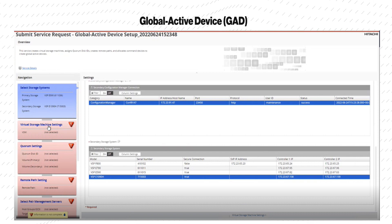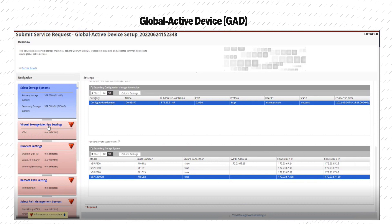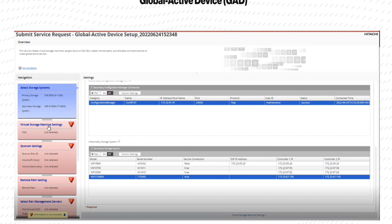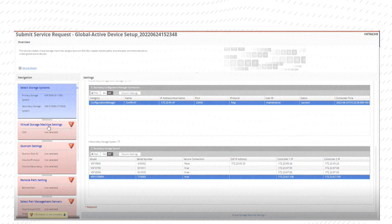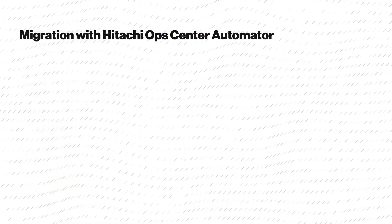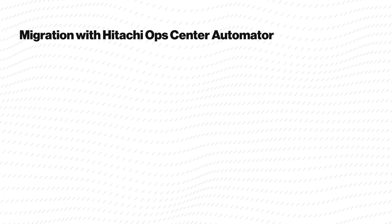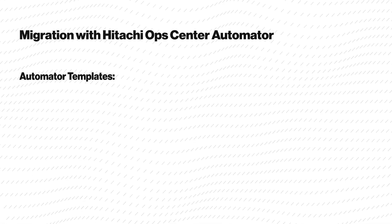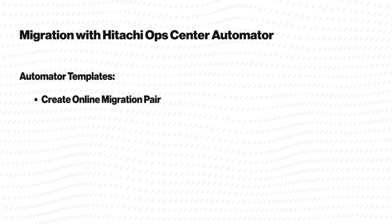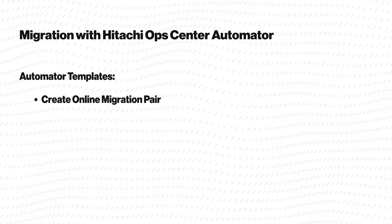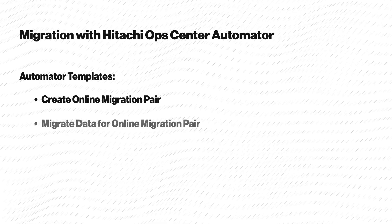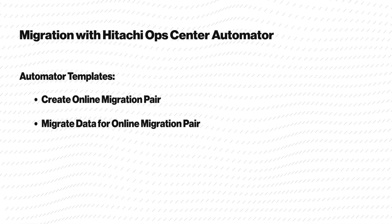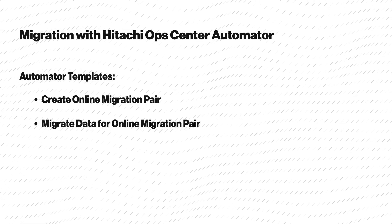In this case, the primary storage system is the VSP-E590 and the secondary is the VSP-E1090. When using Hitachi Ops Center Automator for GAD migration of virtual storage machines, there are two service templates: Create Online Migration Pair and Migrate Data for Online Migration Pair. Using these templates makes migration quite simple.